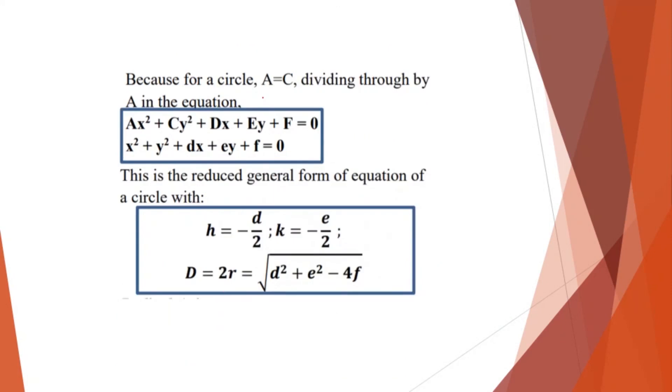So because for a circle, take note that a is equal to c. So this is from your general equation. Okay, so dividing through the equation. So if you divide a x squared plus y squared plus dx plus dy plus f is equal to 0 with a, so this will happen. So the general equation will be reduced in this form, wherein it will be equal to x squared plus y squared plus dx, so small d is equal to the big D over a, then while e is equal to the big E over a, then small f is equal to the big F over a.